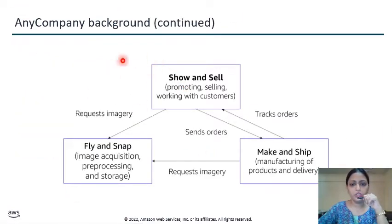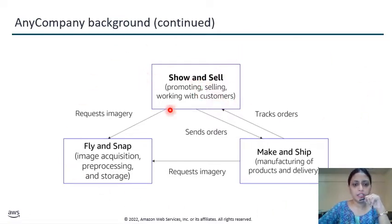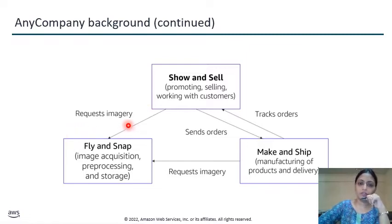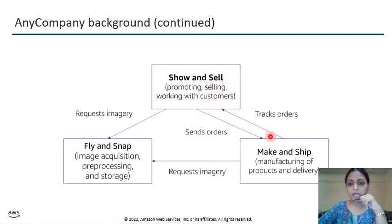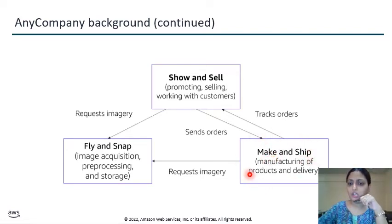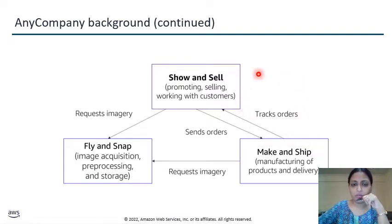For this purpose you need a flowchart like a consistent office show-and-sell, connected to fly-and-snap. The user sends a request and, accordingly, image acquisition, preprocessing, and storage are possible. After that, if a promotion setting is possible, you can make and shape whatever product you want to deliver. The make-and-shape part handles all manufacturing and delivery, and you can track your records from that part.